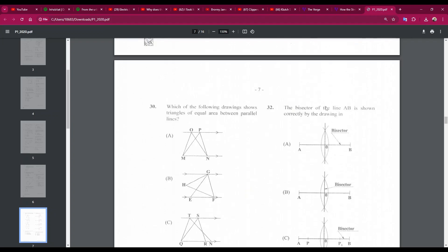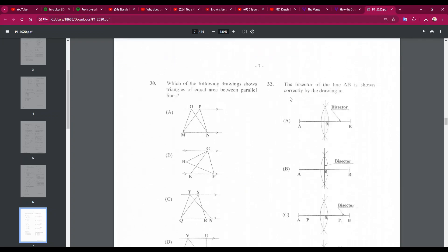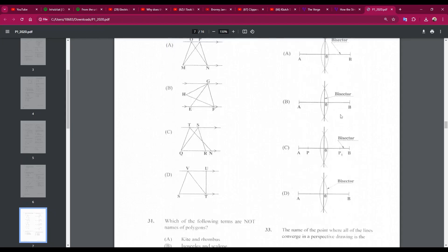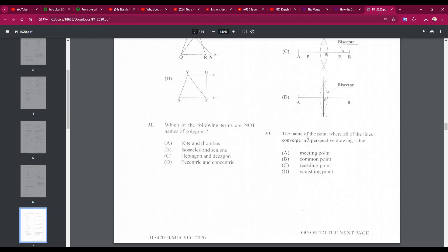Number 32: the bisector of line AB is shown correctly by the drawing in... that will be B. So this is the bisector. This is correct. Number 33: the name of the point where all of the lines converge in a perspective drawing is the D, vanishing point. So all of the lines will converge at the vanishing point. The answer is D, 33D.